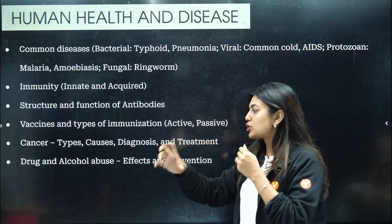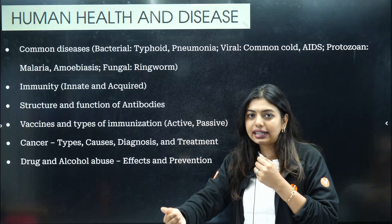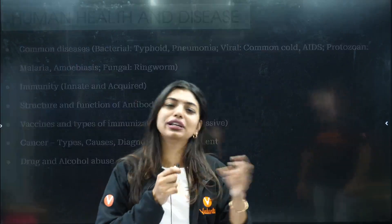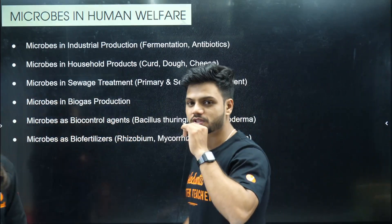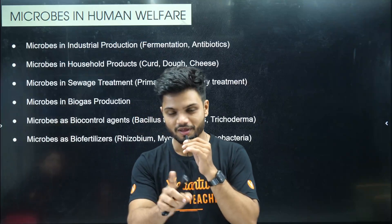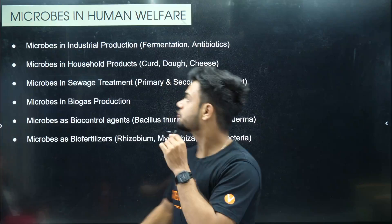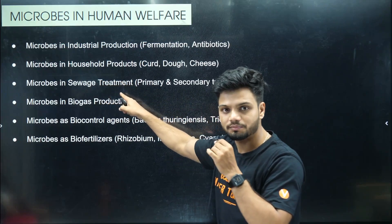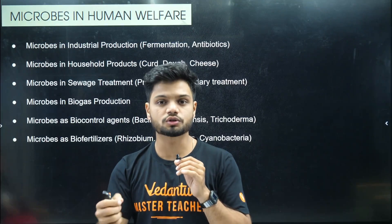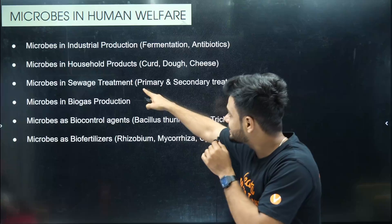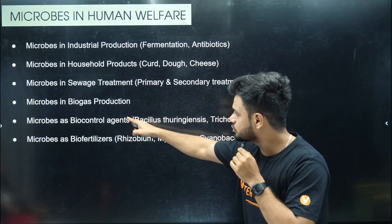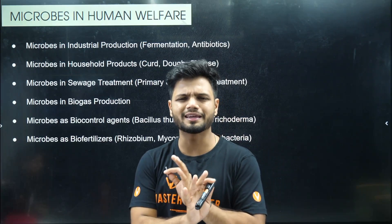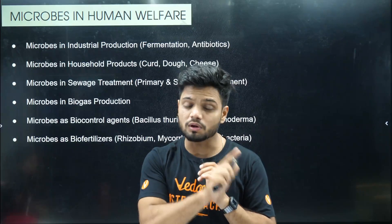Cancer — the most important question is diagnosis: how do you identify cancer and how do you treat it? Those are the two questions that have come. Drug and alcohol abuse — blindly write whatever you know; it is like a GK question. Now, microbes in human welfare — you will always get one question, and that question is always an example. The example can be from household, industrial application, or sewage treatment plant. They can ask a three-mark or five-mark question about the industrial application or the entire sewage treatment plant long answer. They can ask you the biogas long question, or two-mark/one-mark example questions.